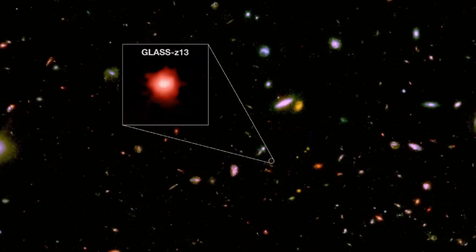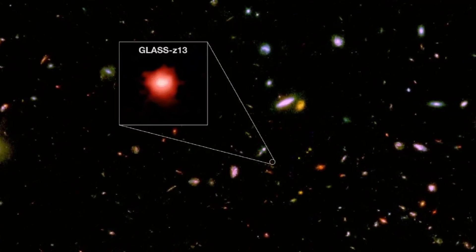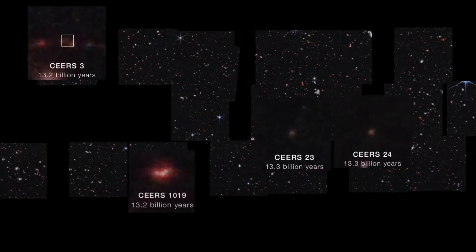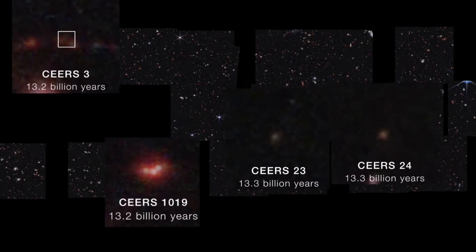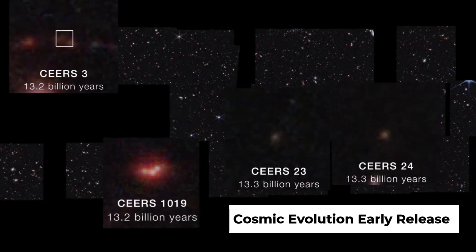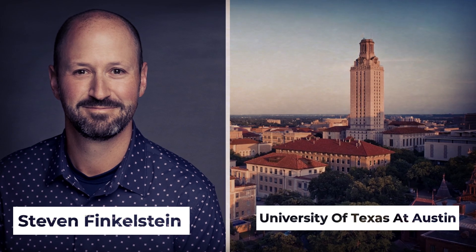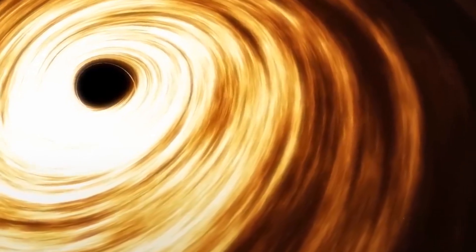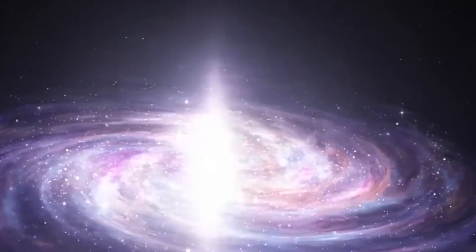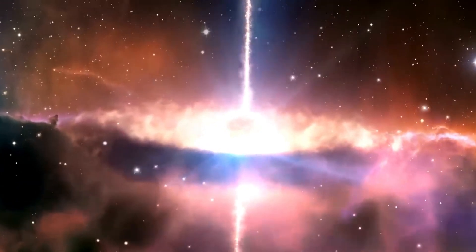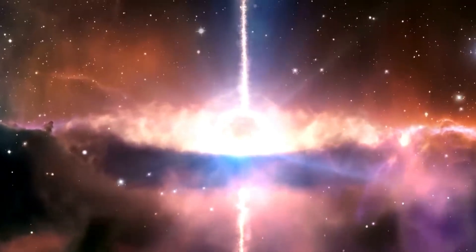These discoveries were made possible by the Cosmic Evolution Early Release Science, CEERS, survey, led by Steven Finkelstein of the University of Texas at Austin. The team was able to determine which emissions in the spectrum are from the black hole and which are from its host galaxy. They also found that the galaxy is ingesting as much gas as possible while producing new stars.